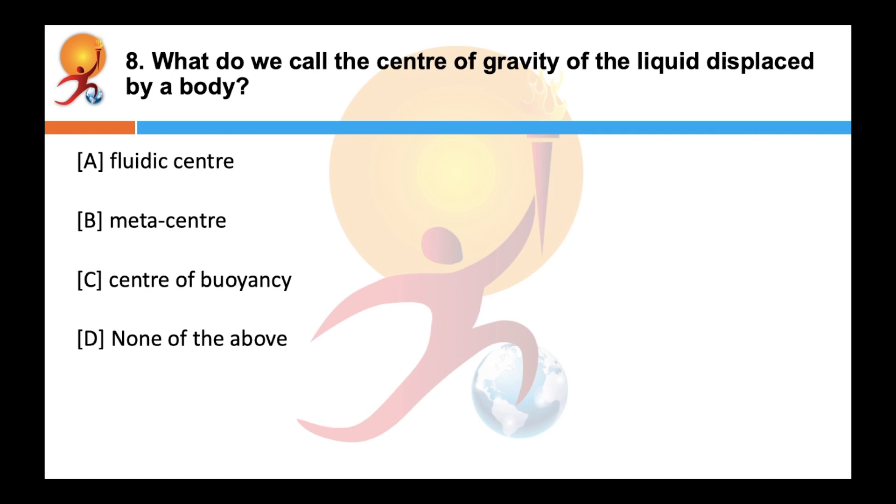What do we call the centre of gravity of the liquid displaced by a body? Correct answer is centre of buoyancy. The centre of gravity of the fluid which is displaced by an object is known as centre of buoyancy. For stable equilibrium or floating body, the line joining the centre of gravity of the body and the centre of floatation should be vertical.